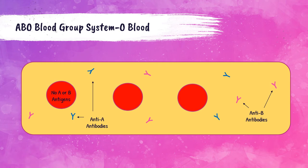This is a drawing of what group O blood looks like. In a group O patient, there are no A or B antigens on the surface of the red blood cells, but they do have both naturally occurring anti-A and anti-B antibodies in their serum. Because of this, group O patients can only receive group O red blood cells. If A blood is given, anti-A antibodies will agglutinate to the A antigens causing a transfusion reaction. The same occurs if B or AB blood is given.